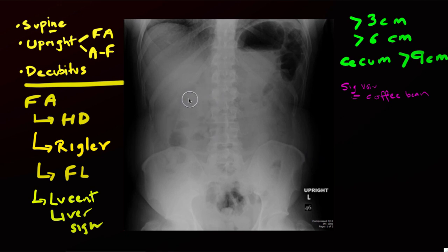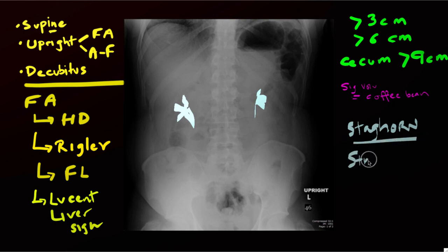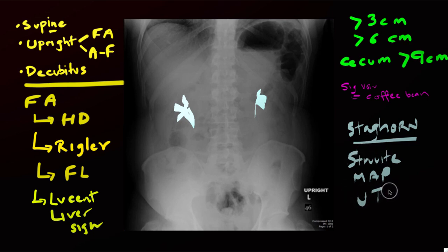On occasion you'll see calcifications conforming to the shape of the renal pelvis and renal calyces — visible in the right or left upper quadrant — known as staghorn calculi. These are composed of struvite, which is made up of magnesium, ammonium, and phosphate with a variable amount of calcium. Staghorn calculi are typically associated with recurrent urinary tract infections caused by urease-producing bacteria, and have a characteristic appearance conforming to the renal collecting system.